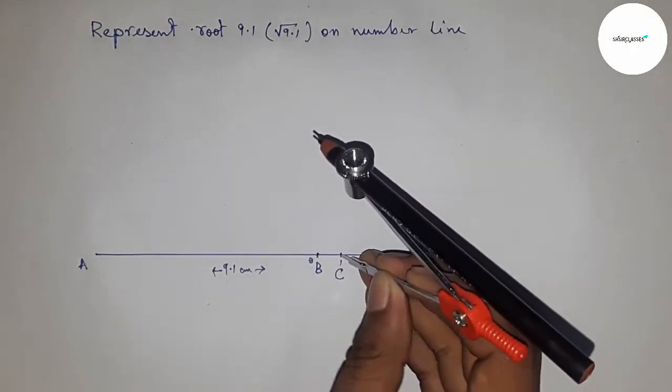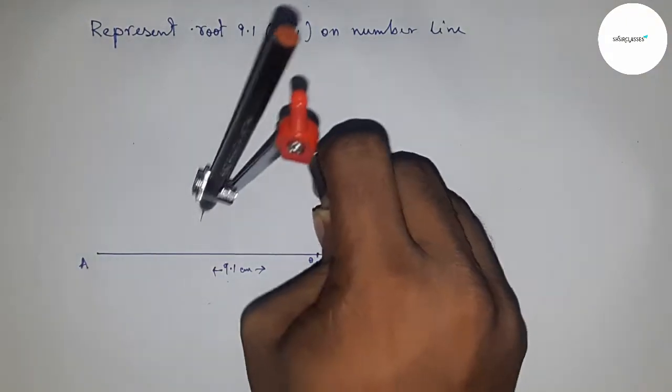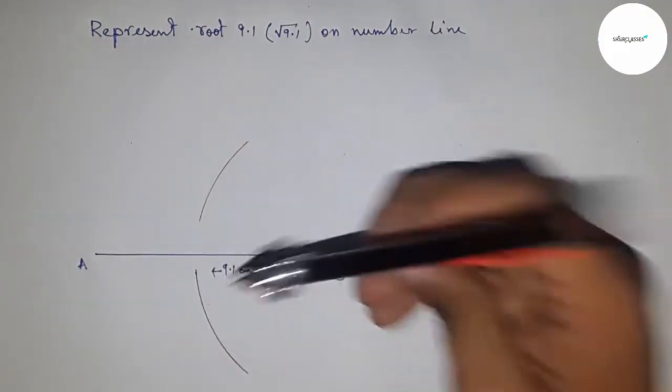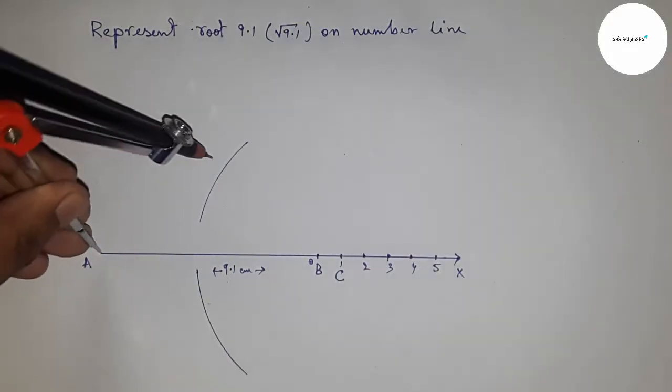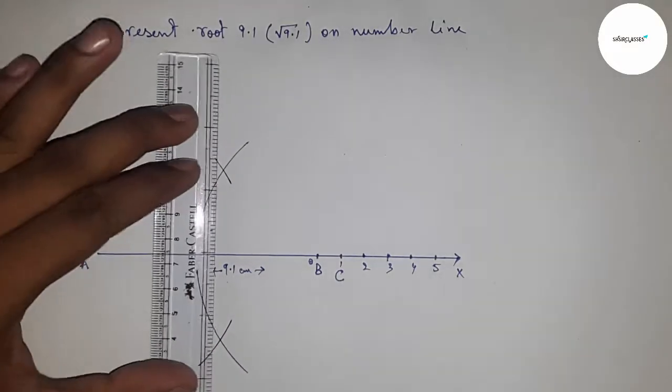Now bisect the line AC. Put the compass here and take greater than half of AC. Draw arcs with the same length and cut the arc. Join these points.